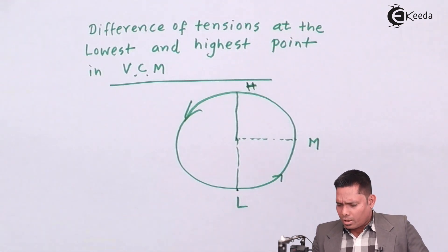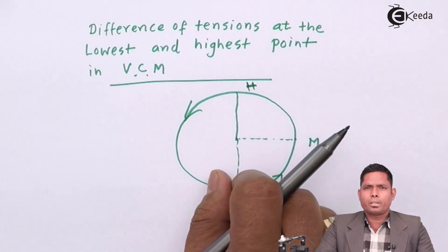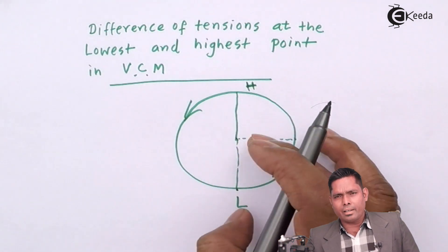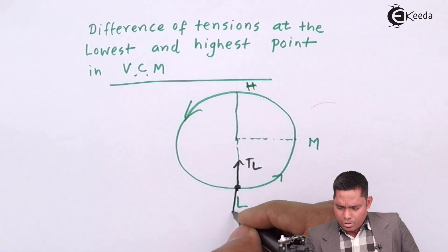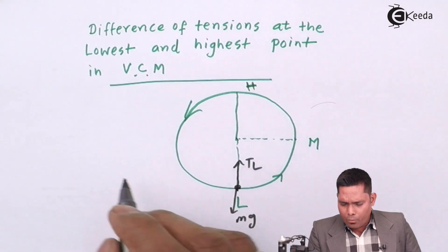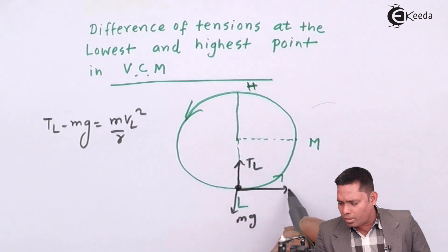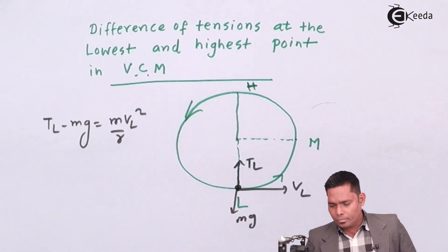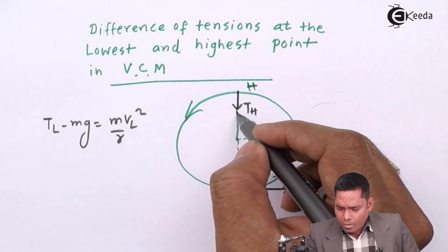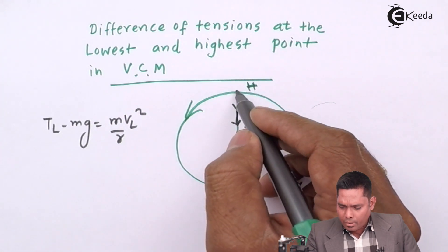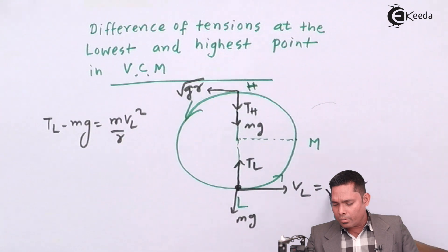Now, the difference in tensions at the lowest and highest point. We have already discussed the expressions for the lowest and highest point. At the lowest point: T_L - MG = MV_L²/R, where V_L is the velocity at that point. At the highest point, tension T_H and MG are both directed downward, giving T_H + MG = MV_H²/R.